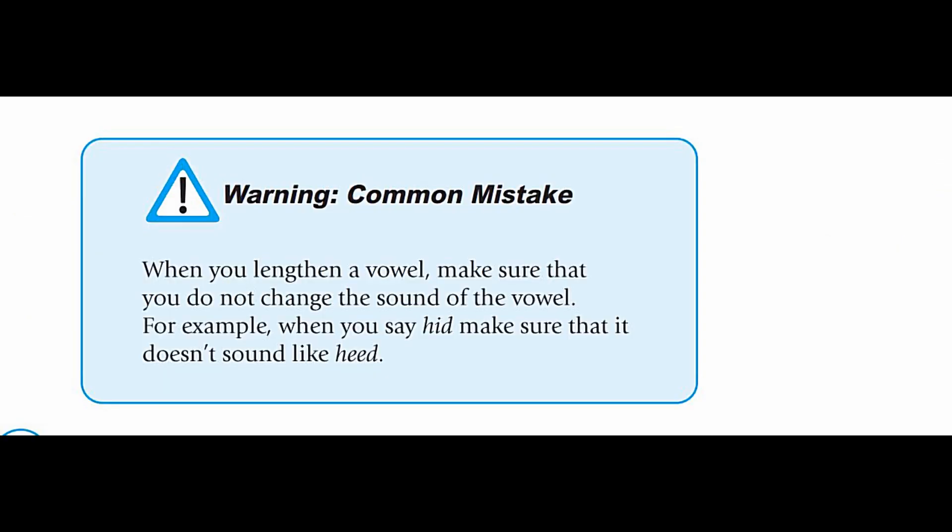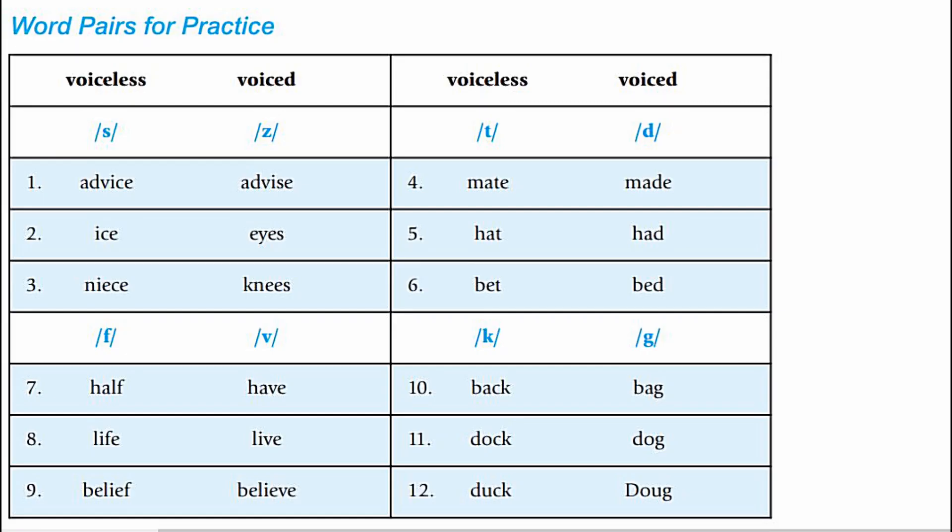Warning, common mistake. When you lengthen a vowel, make sure that you do not change the sound of the vowel. When you say hid, make sure that it doesn't sound like heed. Voiceless and Voiced Consonants Word Pairs for Practice. The first word of the pair ends with the voiceless consonant and the second with the voiced one. Notice the difference in vowel length.